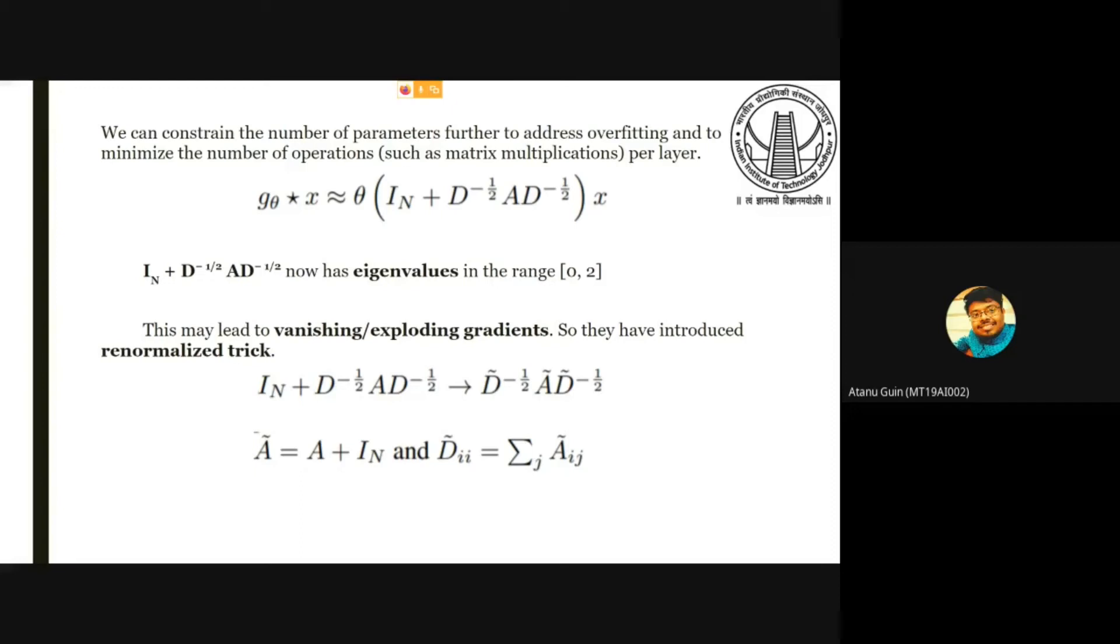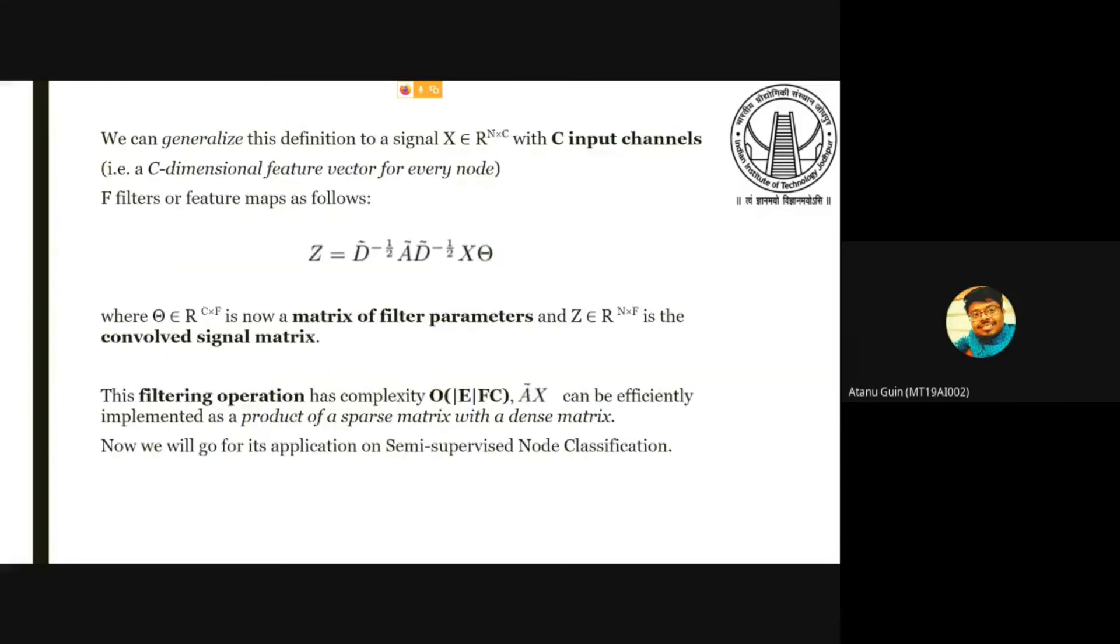We have this expression for the filter. But the eigenvalue of this Laplacian matrix can have a range from 0 to 2, which may have vanishing or exploding gradients. So they have used a normalization trick in which they added the identity matrix with the expression. We can generalize this filter function for C input channels and this can be effectively expressed with a linear combination of the edges and channels.